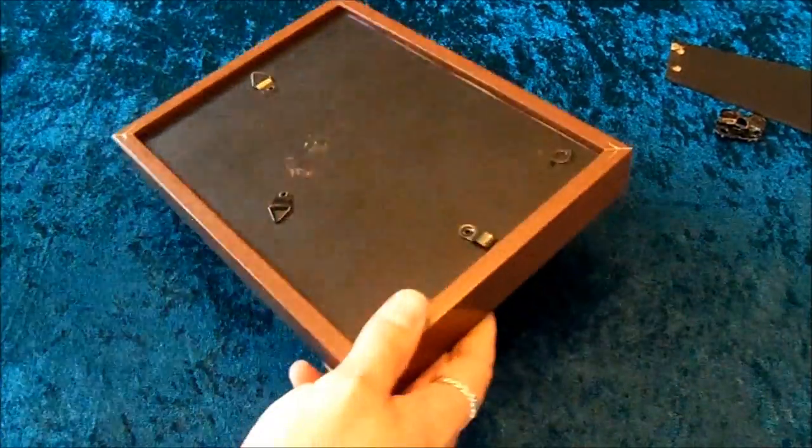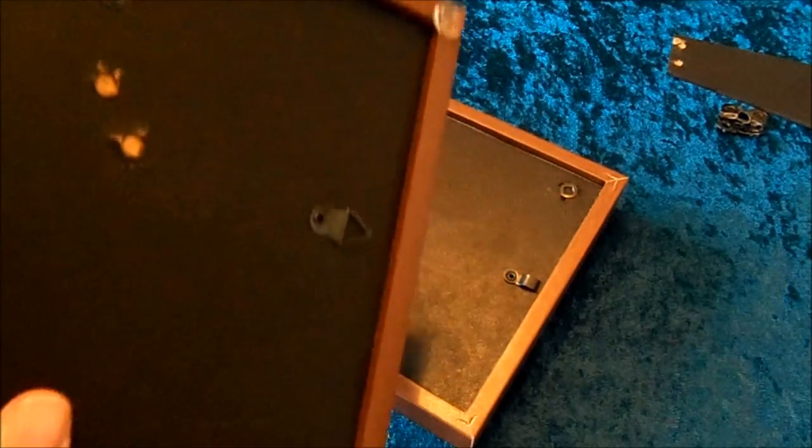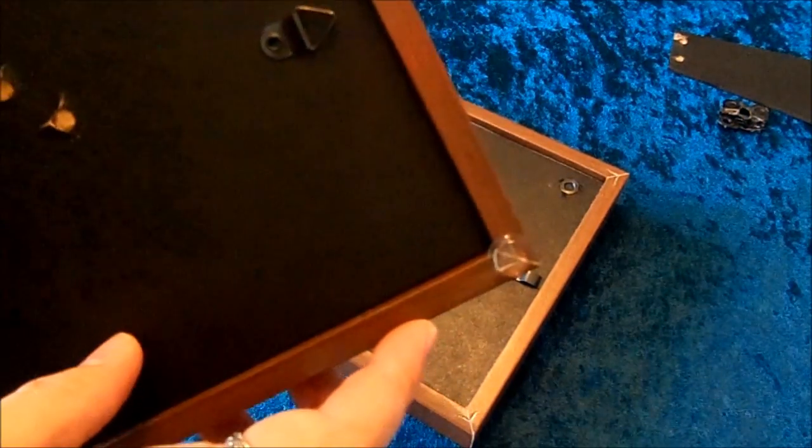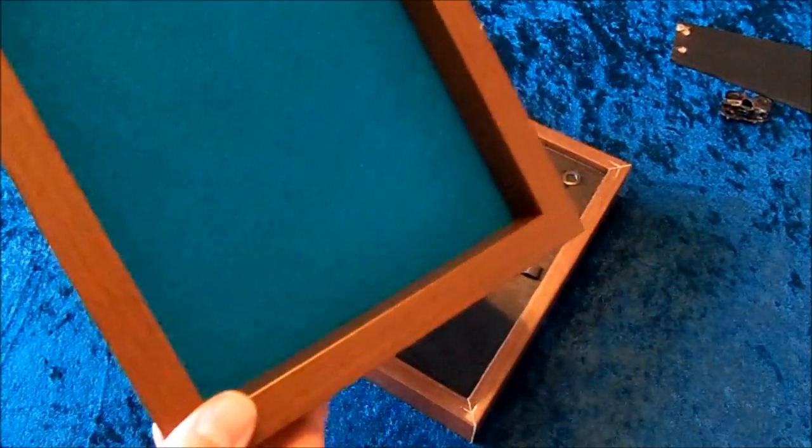One last thing is, if you want to, you can get these little rubber feet. Our table is not that bad, but if you're going over to a friend's house that has a really nice wooden table, these little feet prevent scratching up their table. Also prevents your tray from sliding around at all.